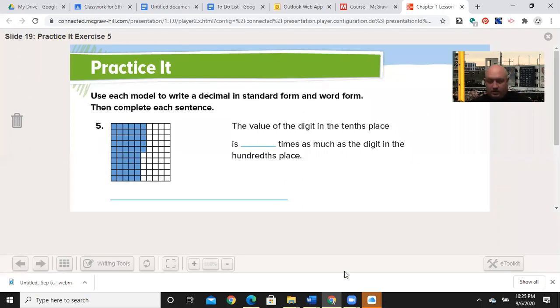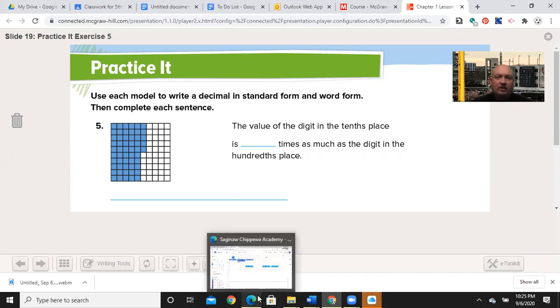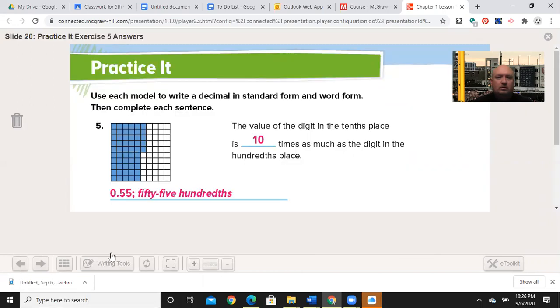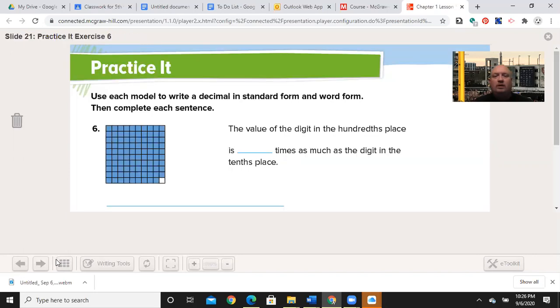Let's do number five together. Use each model to write a decimal in standard form and word form. The value of the digit in the tenths place is blank times as much as a digit in the hundredths place. Well, if you remember, it's automatically going to be 10 times as much. It is 0.55, 55 hundredths. Now you go ahead and do number six. Pause the video and when you're ready, come back.